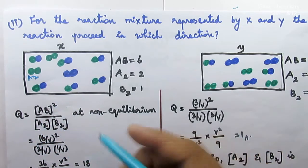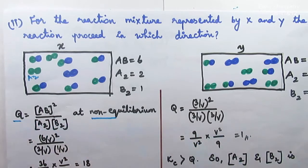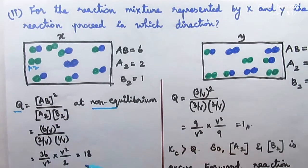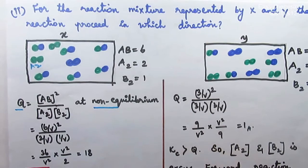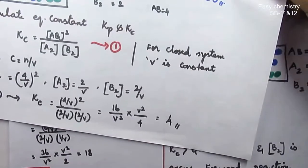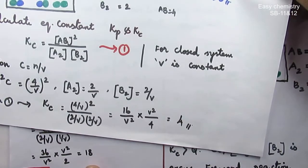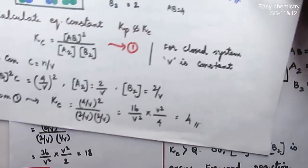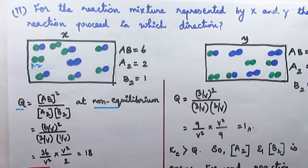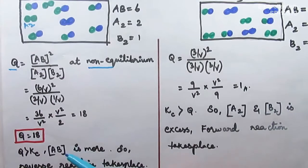Now let's substitute the value. Kc value is 4 and Q is 18. So comparing: Q is greater than Kc. That is the answer — Q is greater than Kc.